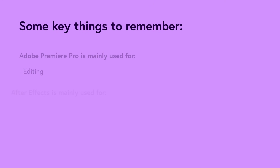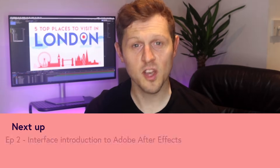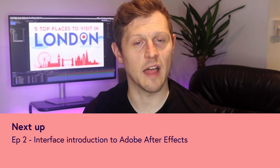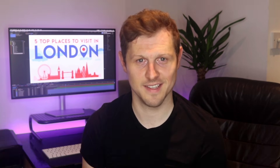To recap, some key things to remember: Adobe Premiere Pro is mainly used for editing, and After Effects is mainly used for post-production, visual effects, motion graphics and animation sequences. That's a brief introduction to Adobe After Effects. In the next video we are going to take a look at the After Effects interface, so I will see you in the next video.